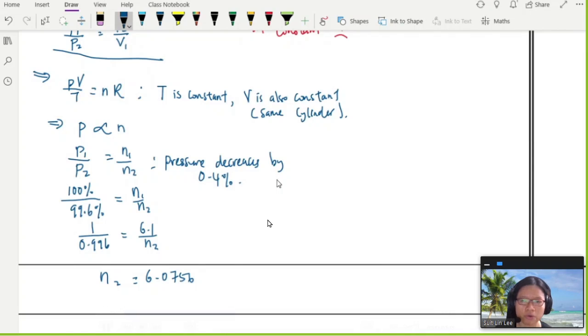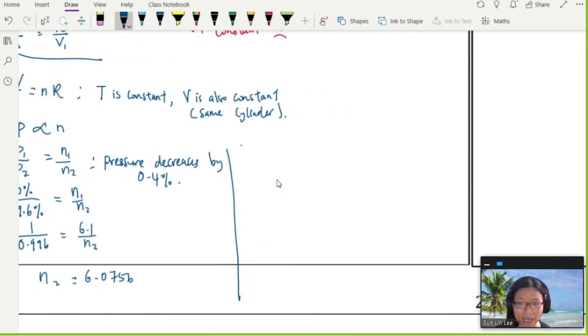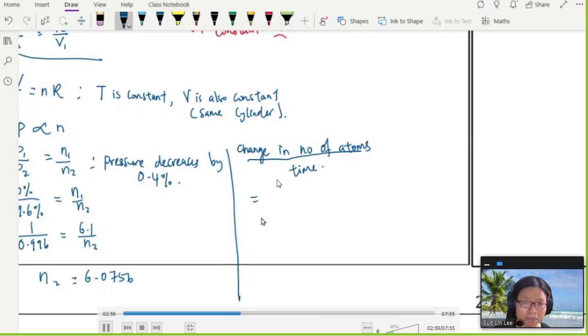Now we're going to find the amount of gas that has escaped, which is n1 - n2. Change in the number of atoms per unit time, because that's what they want. The number of moles that escaped would be 6.1 - 6.0756.